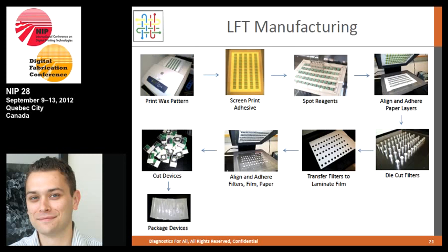For manufacturing: we start with wax printing, then heat it as described. We screen print adhesive. The liver function test has two layers of patterned paper, two layers of laminate, and a blood cell filter. We spot reagents using a Biodot robotic spotter — inkjet printing technology could also work. A simple jig aligns the two paper layers, filters are die-cut and transferred to lamination, everything is sandwiched, laminated, cut, and packaged. Right now at small scale we make about 500 devices per day, enough for field tests and clinical trials. We've chosen techniques that are highly scalable and could produce tens of millions of devices.